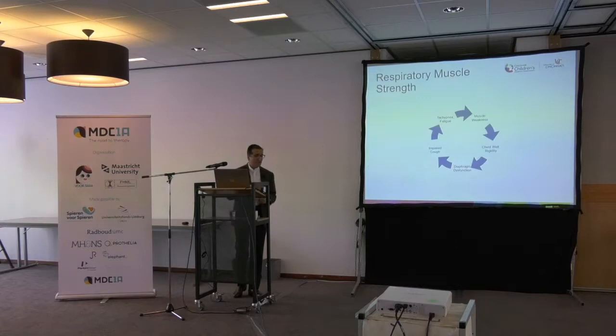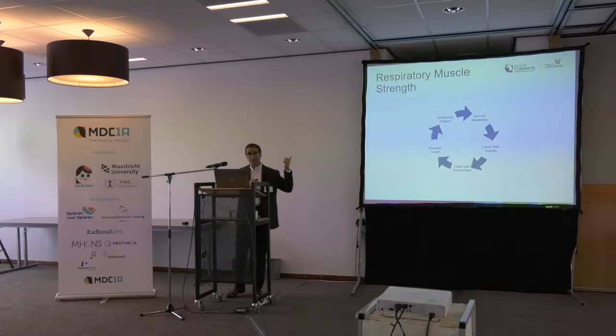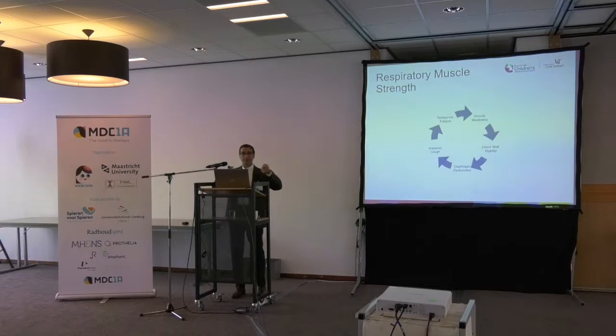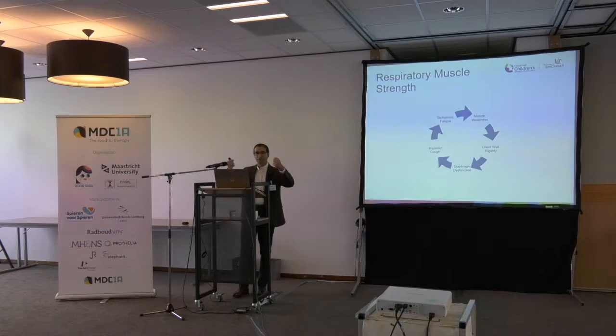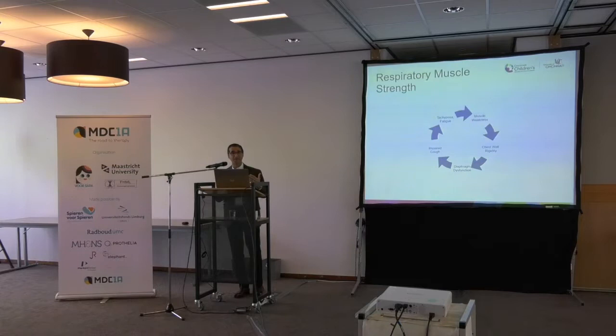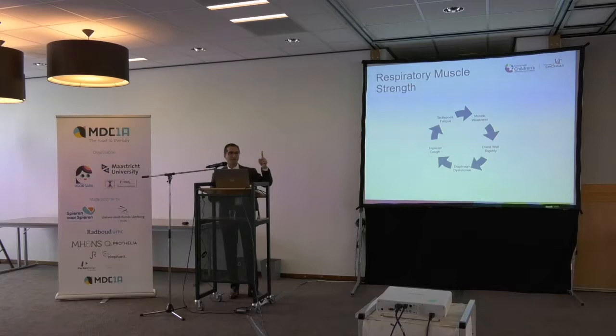Diaphragm dysfunction sometimes involves scoliosis, where vertebral bodies rotate and take the ribs with them. The diaphragm inserts into the lower ribs, so when those ribs are twisted — like twisting a sheet of paper — the diaphragm gets torqued and its effectiveness is reduced. This leads to reduced ability to take a deep breath, which is important for a cough, perpetuating a cycle of difficulty recovering from illness.